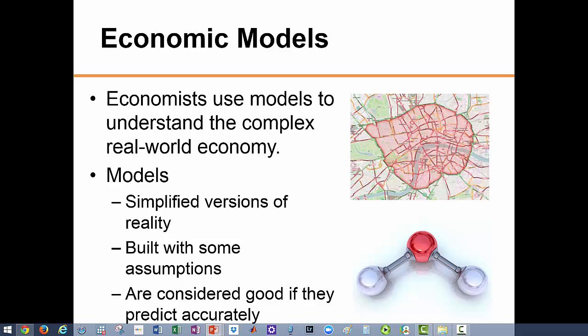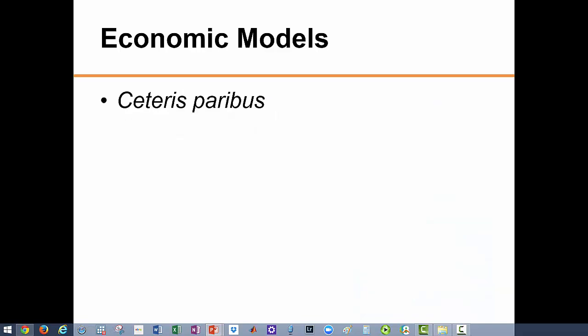A good model is one that is simple to understand and capable of making good predictions. If a model predicts well we keep it and use it. If a model's predictions are far from the real data, the model may be missing some important variables, and at times we will try to modify, revise, or maybe discard it. The two figures representing a map and a water molecule are examples of models.